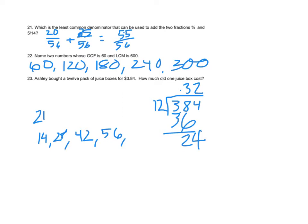Number 22, name two numbers whose GCF is 60 and the least common multiple is 600. Factors are smaller because they divide into the number, and multiples are greater. So my numbers are between 60 and 600.